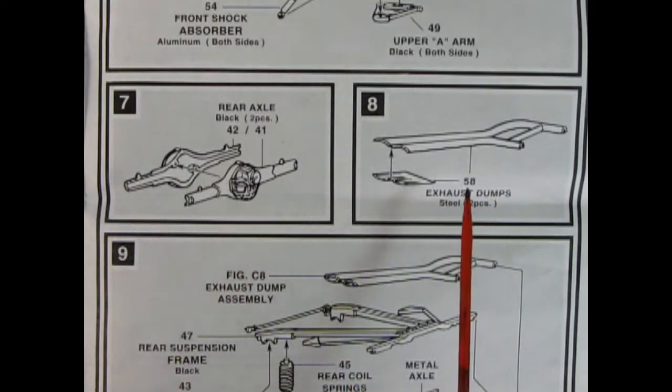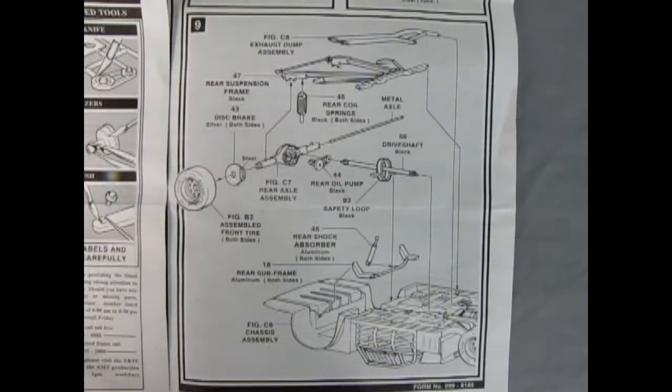Panel seven and eight are showing the exhaust dumps going together here and our two-piece rear axle getting glued together over here. In panel nine, we can see the exhaust dumps being put in place, as well as our rear suspension frame. And then we've got our springs going in there. There's the differential from step seven with the metal axle going through. We also have our disc brakes. Got to put one over here. And then we also have a rear oil pump and then a drive shaft going in place with the big loop in here. Safety loop in case it breaks away. And then we've got our wheels going on and our shock absorbers, as well as the rear subframe. So all this gets sandwiched down right in here onto the back of our chassis.